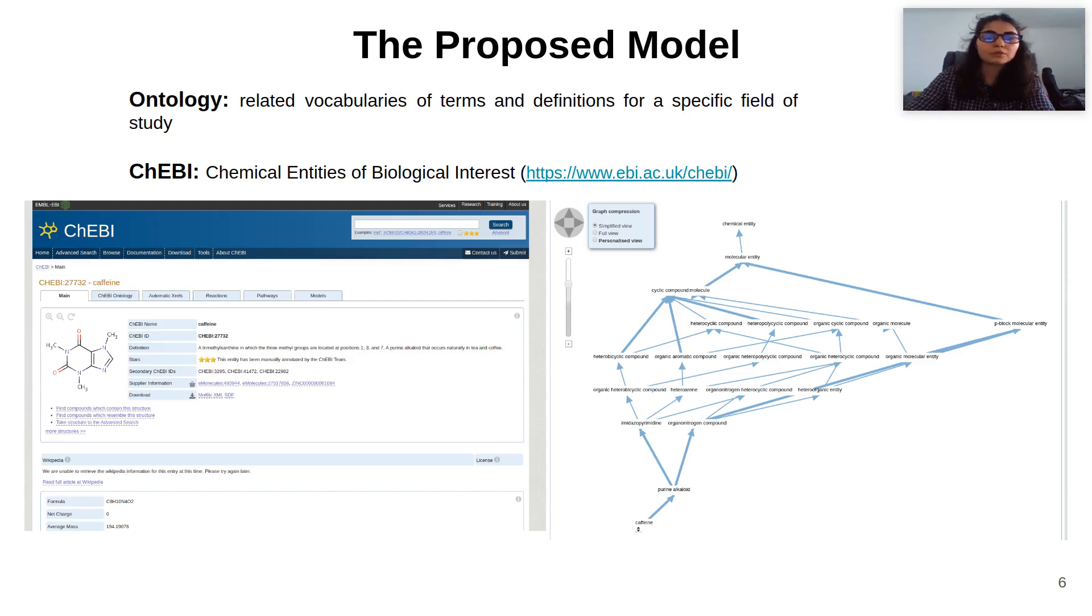Ontologies are related vocabularies of terms and definitions for a specific field of study. For this study, we used ChEBI, the Chemical Entities of Biological Interest Ontology, a dictionary of molecular entities.